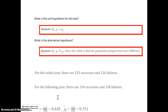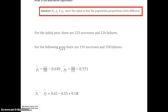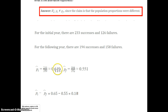Alpha is .01. The null hypothesis is p-initial equals p-following; the alternative hypothesis is p-initial is not equal to p-following — we're claiming they're different. Normality is satisfied: for the initial year, 233 successes and 126 failures; the following year, 194 successes and 158 failures. p-initial-hat is 233 out of 359, which is .649. pf-hat is 194 out of 352, which is .551. The difference of the hats, rounding to two decimal places, is .65 minus .55, which gives .10.